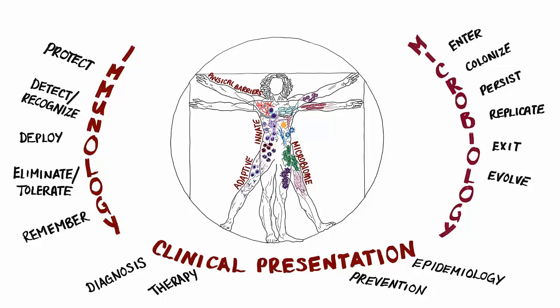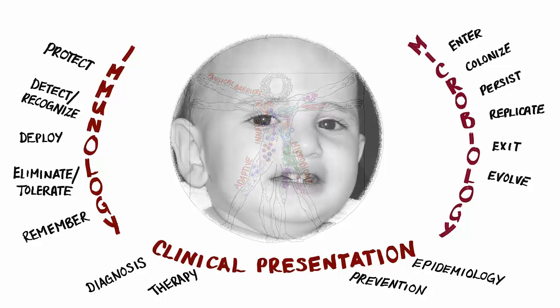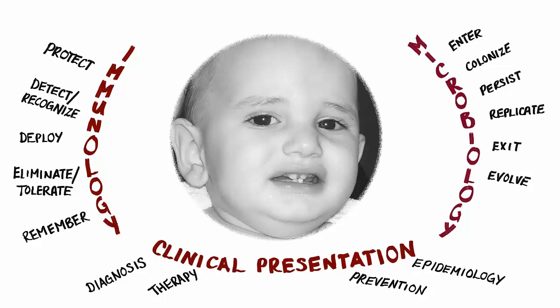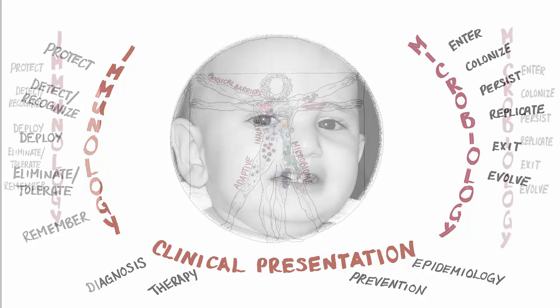Today we're going to be talking about a virus that infects virtually every child in North America before their second birthday. The most common disease that this virus causes in little people is a condition called RSV bronchiolitis.